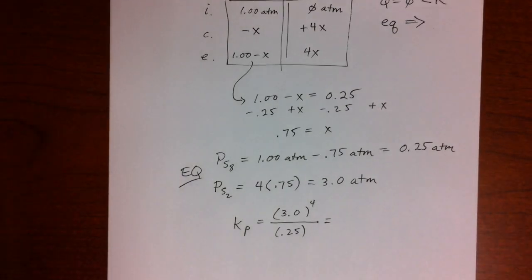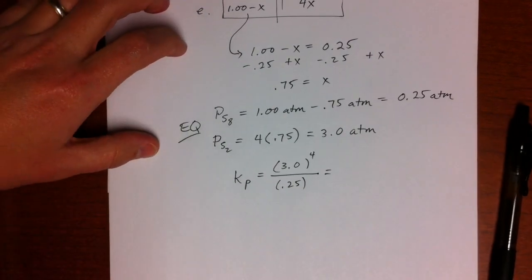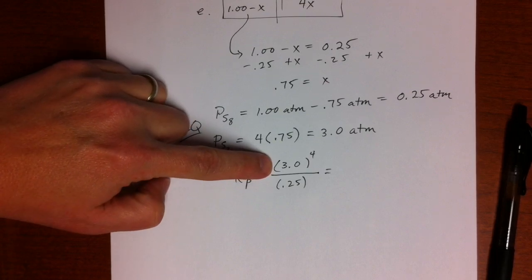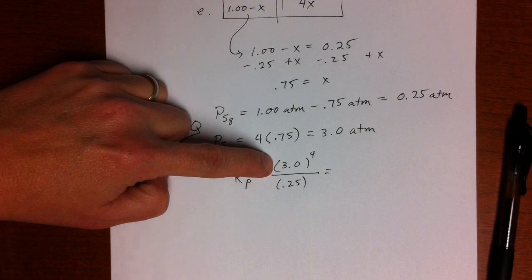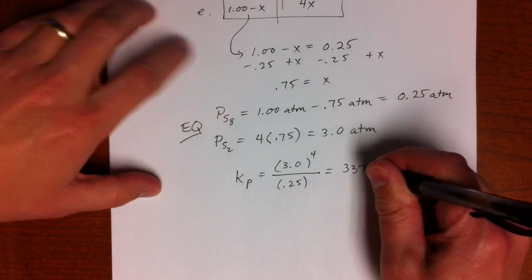Okay, just had to pause there for a second. So we were calculating equilibrium constant, KP. So 3 to the 4th power divided by 0.25, and I get, before rounding, 337.5.